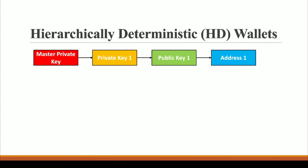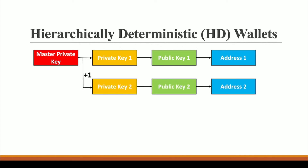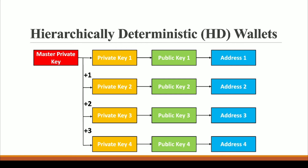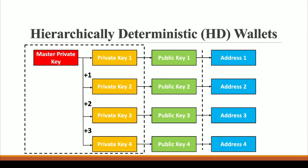Not only this — what we can do is add one to this private key, and now we have an entirely different private key. We can use this second private key to generate a second public key and a second address. In the same way, we can continue and have hundreds of private keys and hundreds of Bitcoin addresses, with the help of which nobody can track who we are or what we are doing.